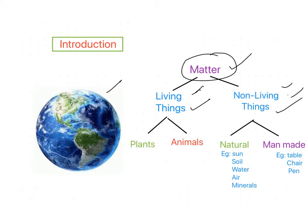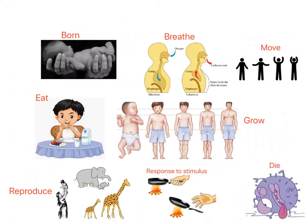The things which come under living matter are called living things, and the things which come under non-living matter are called non-living things. Living things are mainly classified into the plant kingdom and animal kingdom. Non-living things are classified into natural type — such as sun, soil, water, air, minerals — and man-made type, like table, chair, pen, and many things used in our daily life.